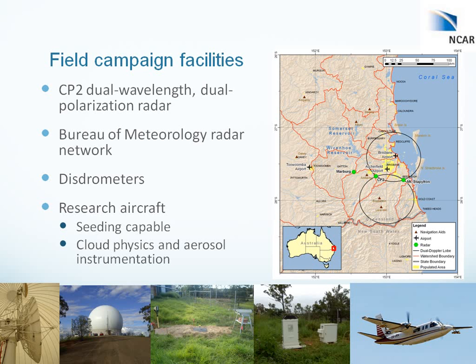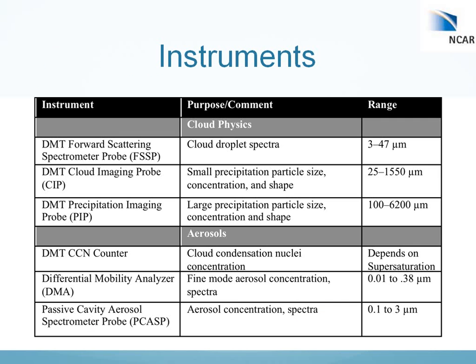Our research aircraft was capable of seeding with hygroscopic flares, and it also had cloud physics and aerosol instrumentation. The key instruments I'm going to be discussing are the FSSP, or Forward Scattering Spectrometer Probe, which measures cloud droplet spectra from about 3 to 47 microns. We also had a cloud imaging probe and a precipitation imaging probe, used to identify regions within the cloud that might have been influenced by rain falling from above — helping us exclude measurements where we did not want rain contamination. We also had aerosol probes: a cloud condensation nuclei counter, a differential mobility analyzer, and a passive cavity aerosol spectrometer probe for measuring aerosol spectra.